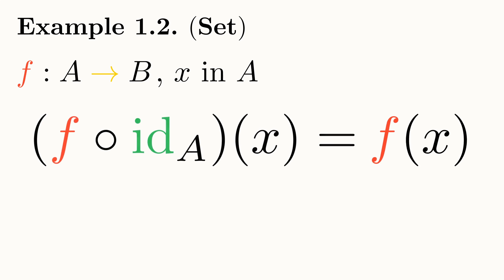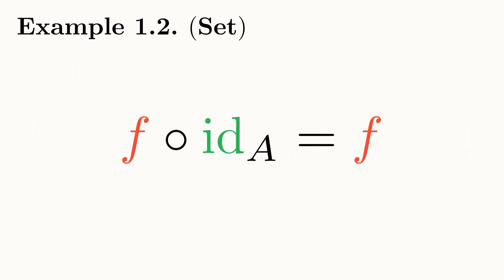To verify this, just take any old function f from a to b, then take an element x in a and find where this element is mapped to when we do f follows id on a of x. We know, by the definition of composition in Set, that this equals f of id on a of x. But we also know that id on a of x is just x, as the identity arrow maps any element in a to itself. Then we are left with f of x. As any element x in a is mapped to f of x, f follows id on a is exactly the same function as f.